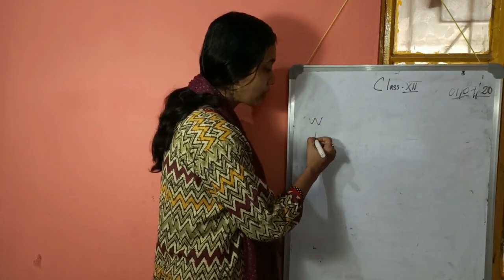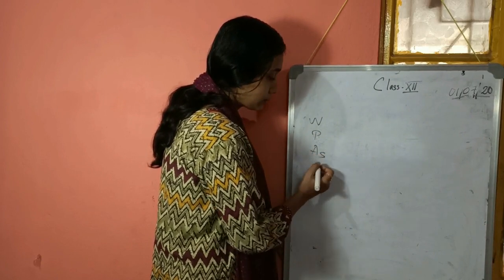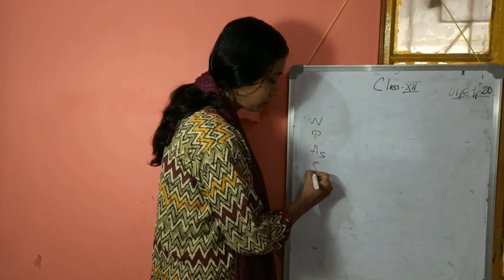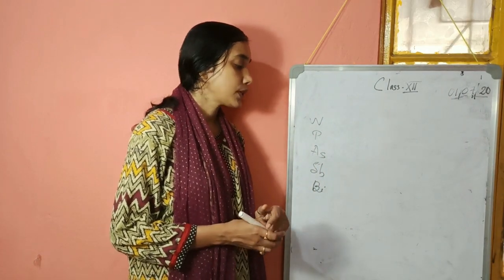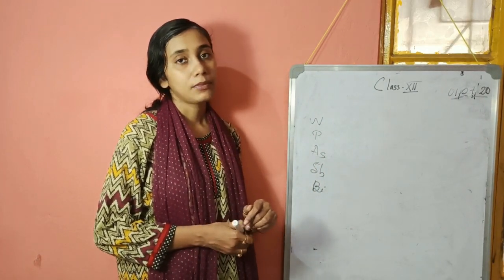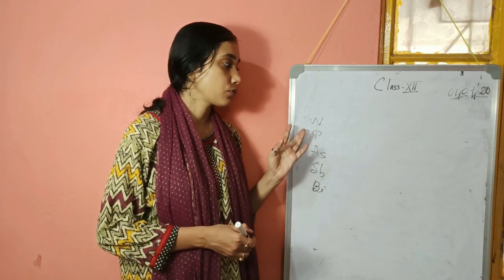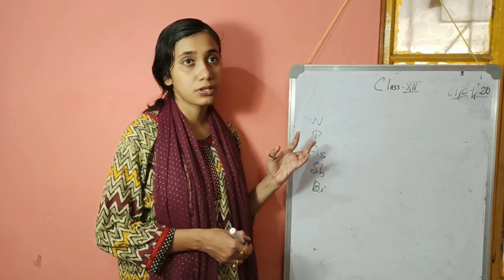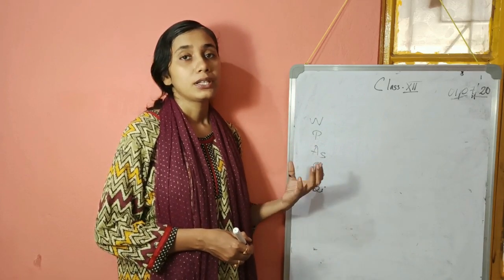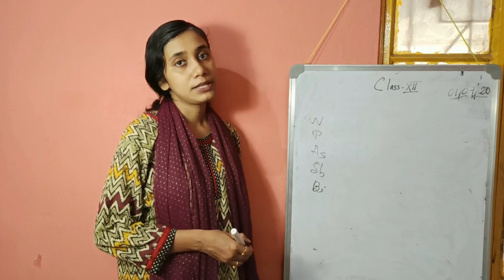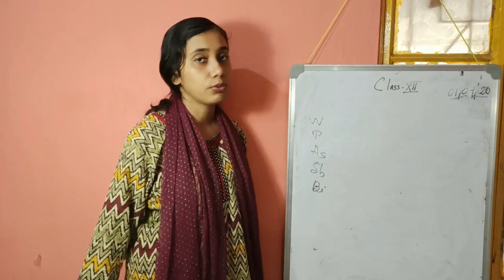In p-block elements, we have Group 15 onwards in our syllabus, so we will be starting with Group 15. Group 15 is the nitrogen group, also known as pnictogens. The meaning of the name comes from suffocation — nitrogen does not help in respiration. Somebody inhaling in a nitrogen atmosphere will be suffocated. That's why all these elements are called pnictogens.